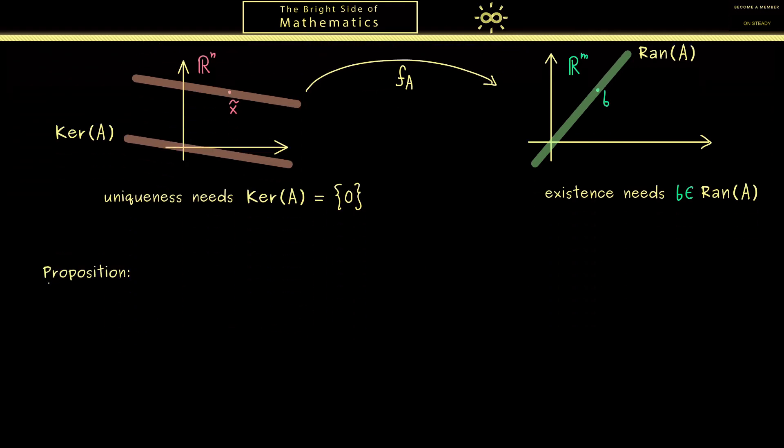With that in mind, let's write down that the set of solutions is indeed an affine subspace. This will be the important proposition of this video today. This is easy to state: for a system given as the equation Ax = b, the set of solutions, which we will denote by S, is a so-called affine subspace.